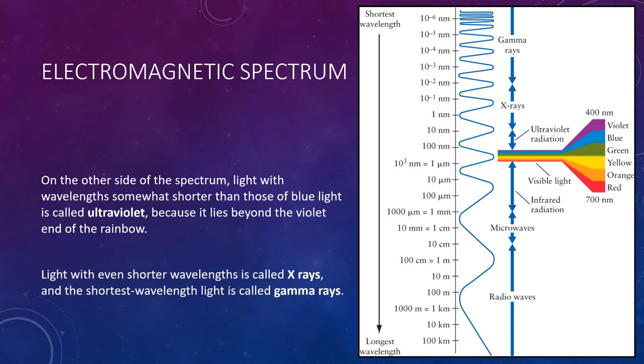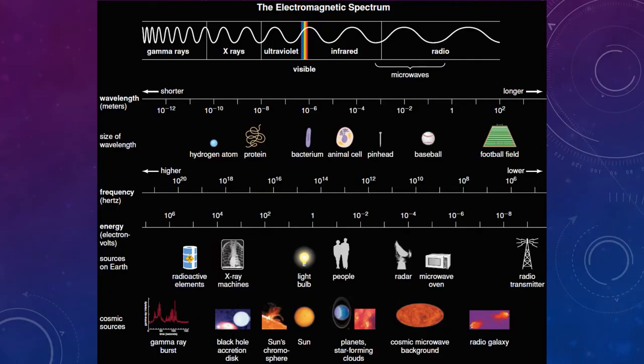On the other side of the spectrum, light with wavelengths somewhat shorter than those of blue light is called ultraviolet light, because it lies just beyond the blue or violet end of the rainbow. Light with even shorter wavelengths is called x-rays, and the shortest are gamma rays. Notice that visible light is an extremely small part of the entire electromagnetic spectrum. The reddest red that our eyes can see only has about twice the wavelength of the bluest blue. But the radiowaves from your favorite radio station are a billion times longer than the x-rays used in a doctor's office.